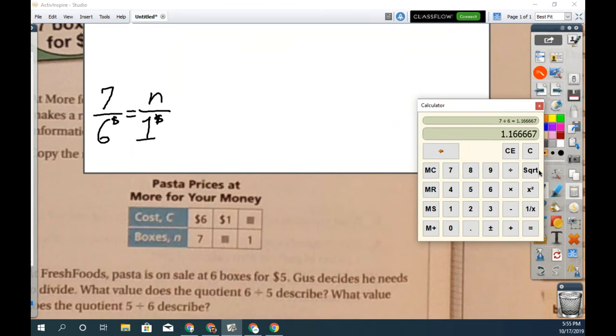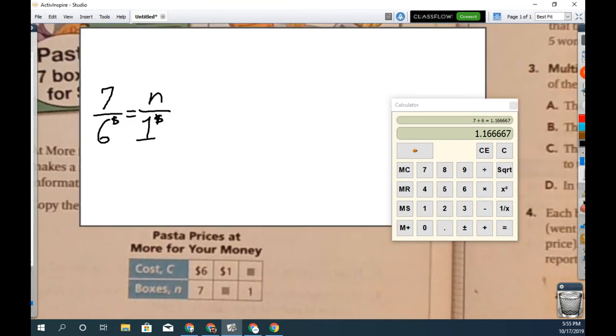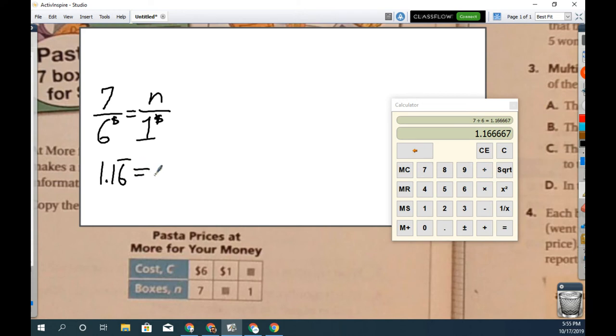And we do seven divided by six equals one point one six. So in this case, I'm going to move this around a little bit. Seven divided by six is one point one six repeating, and that is going to give us the number of boxes per one dollar. And that means if we have one dollar we can fill in this empty spot in our table. We are going to get one point one six boxes repeating.